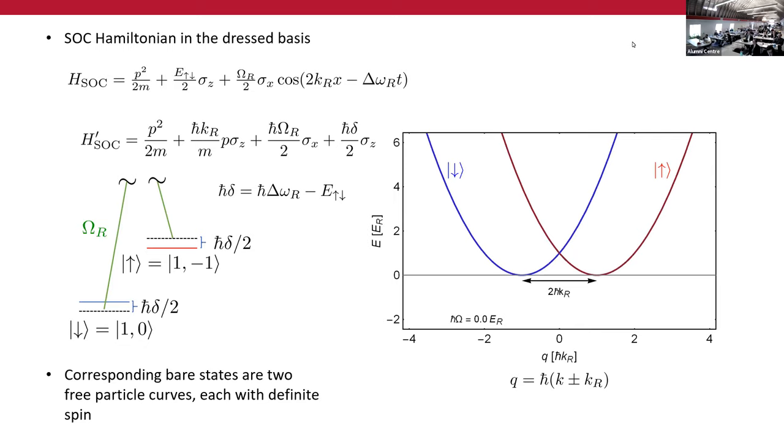In the dress basis, we look something like this, where one of the parabolas represents the p squared over 2m, just the kinetic energy of one of the spin states. And then the other one is momentum shifted and is the other spin state. So if there's no coupling at all, those two parabolas just cross and we're fine.